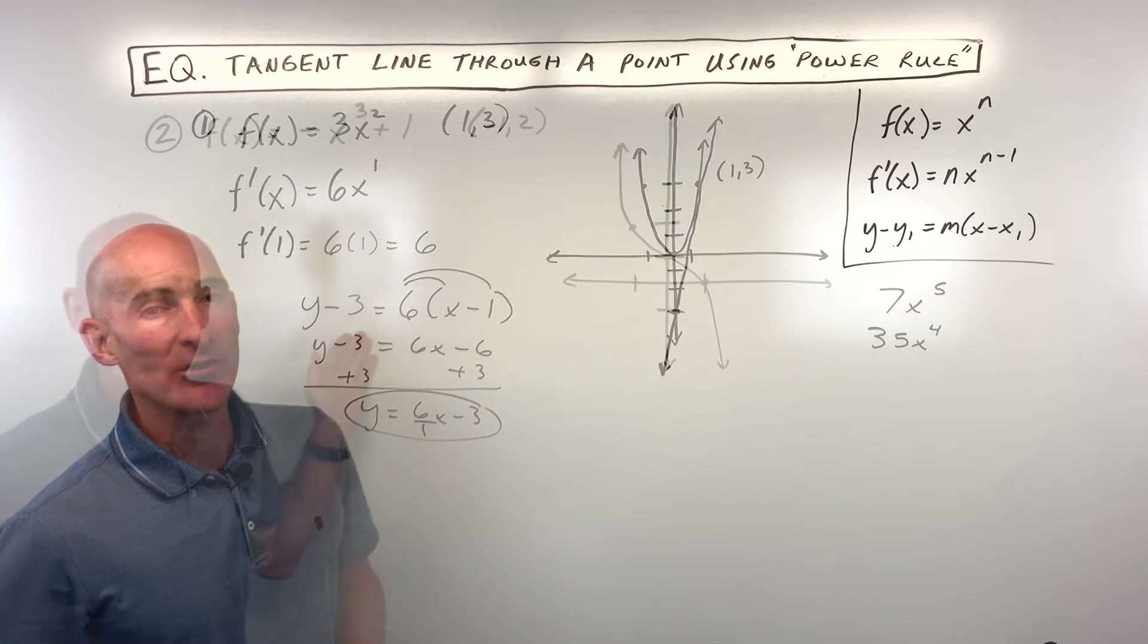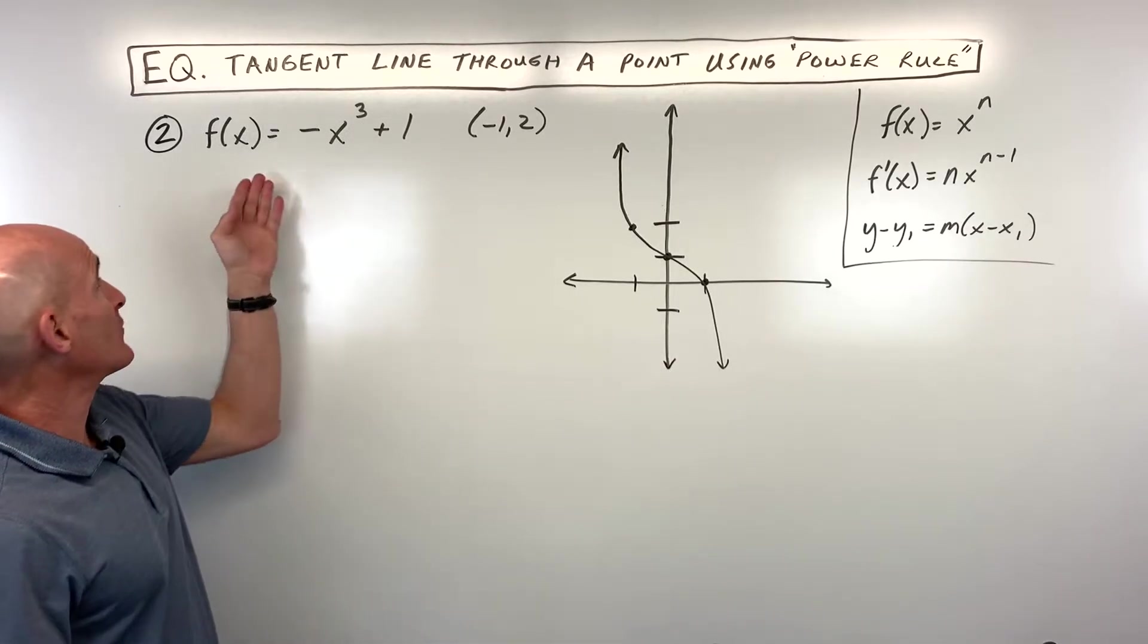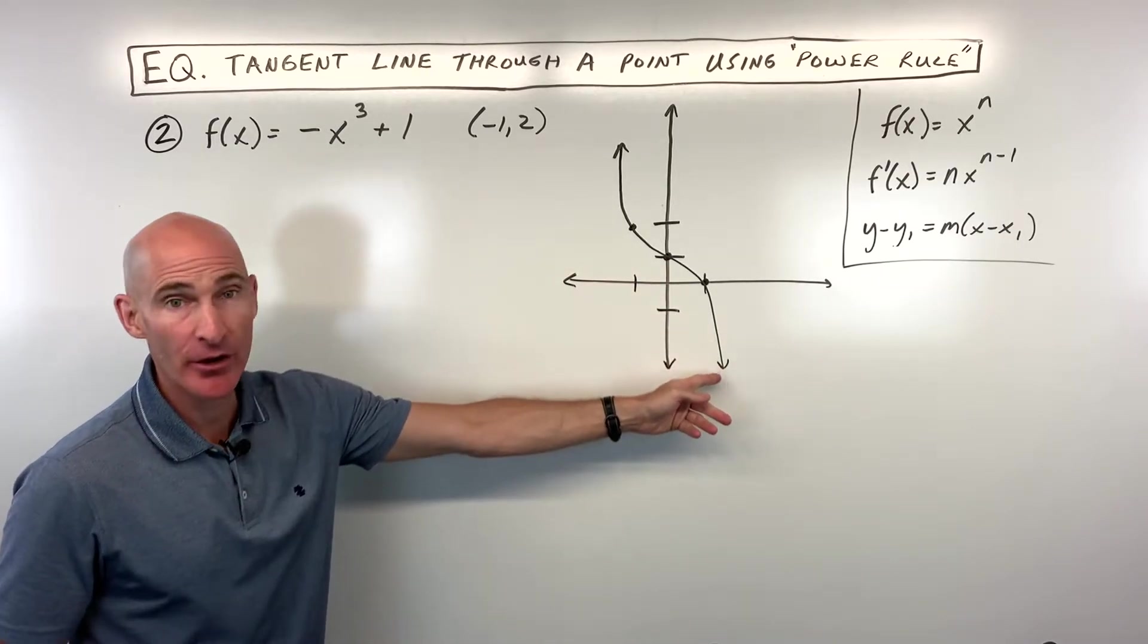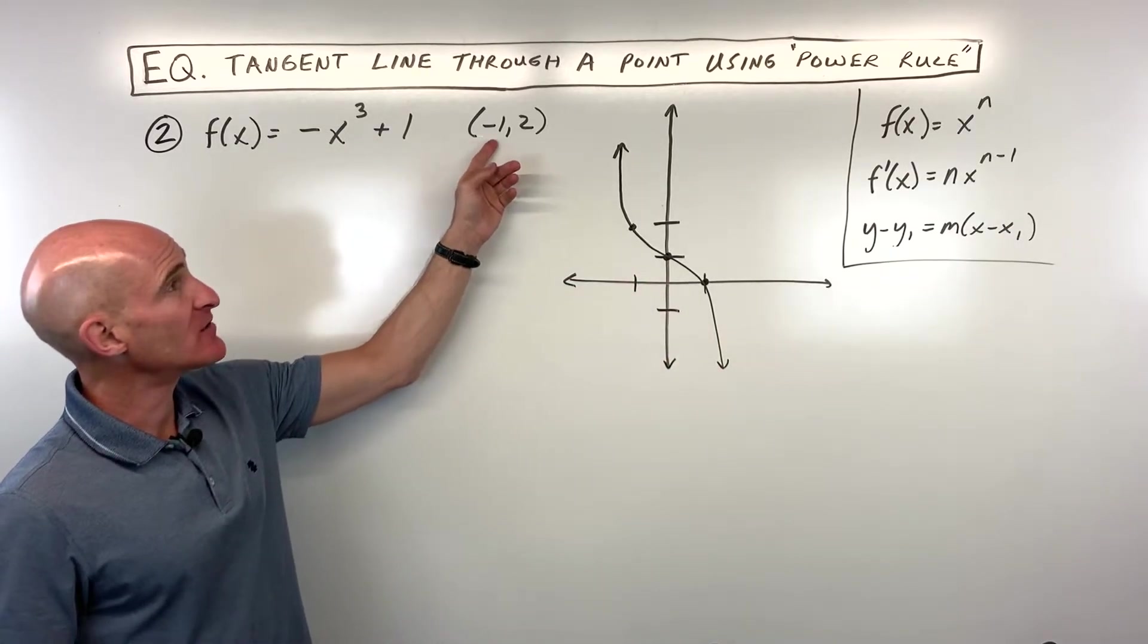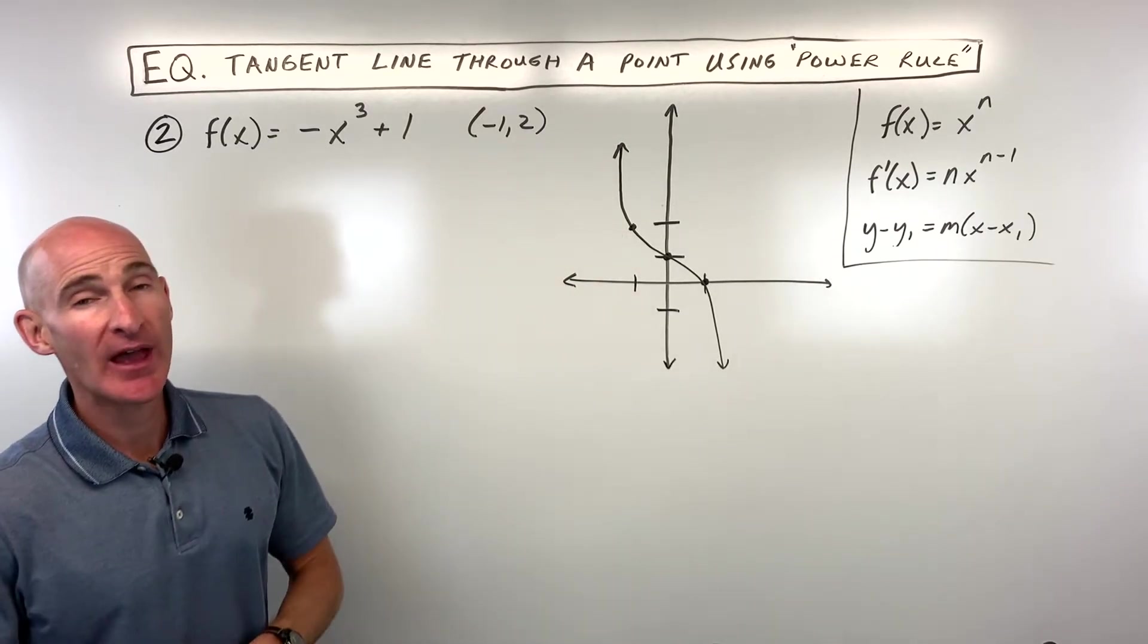Let's take a look at another example. See if you can do example number two on your own for practice. We've got this function negative x cubed plus 1, which is graphed right here. We want to find the equation of the tangent line through this point negative 1 comma 2.